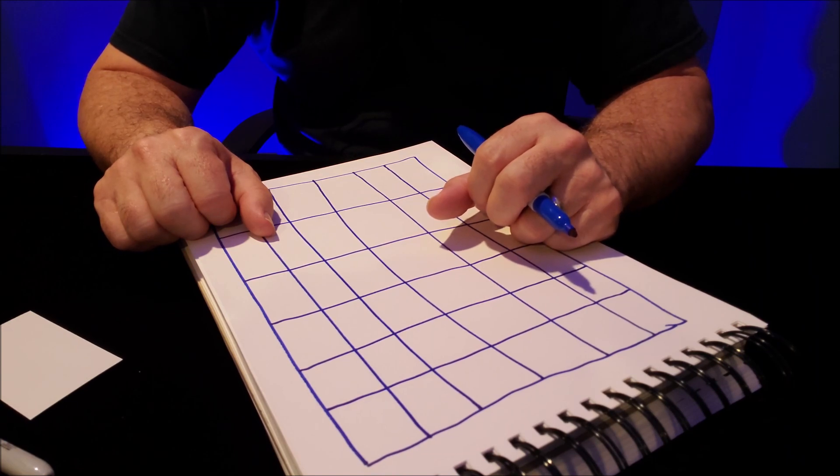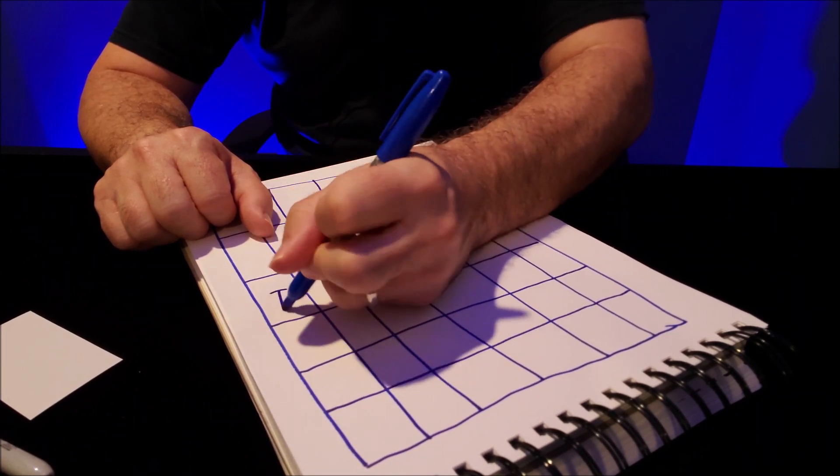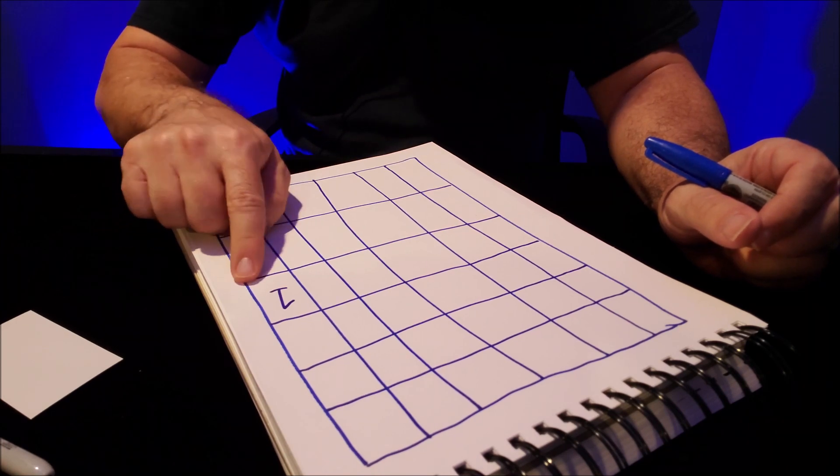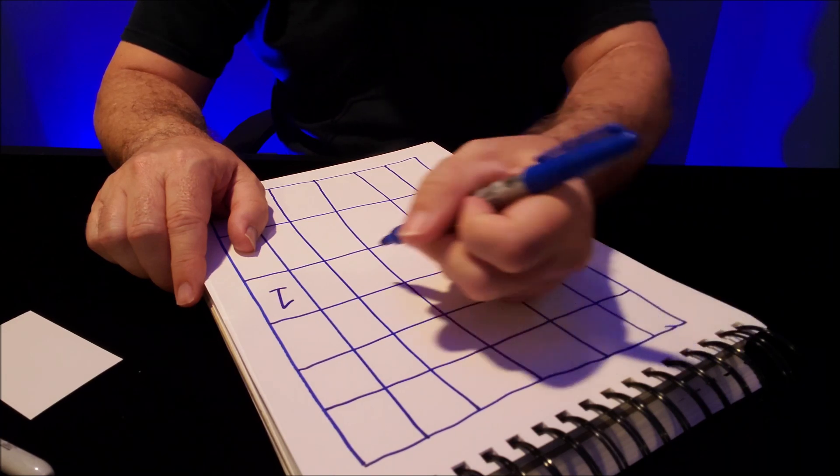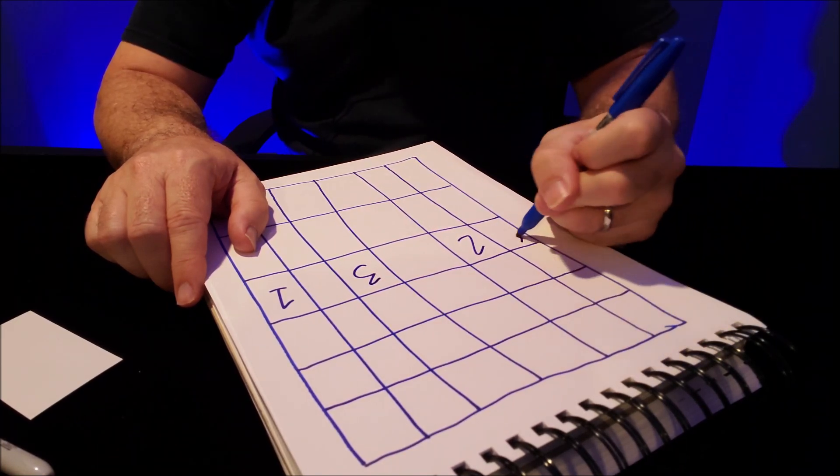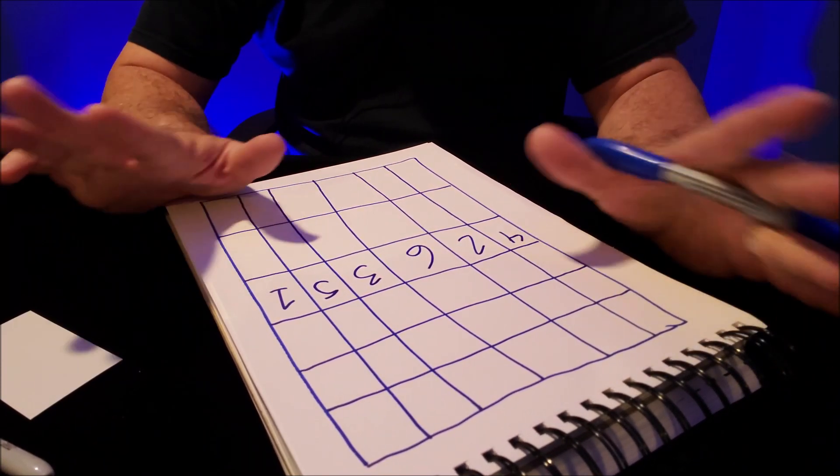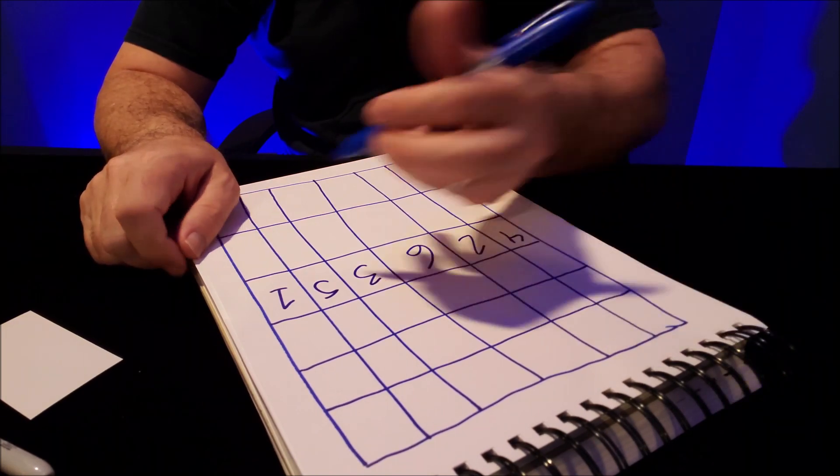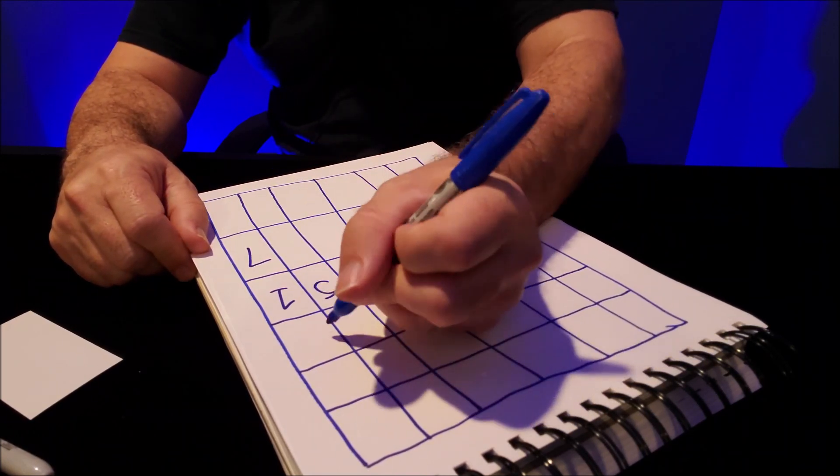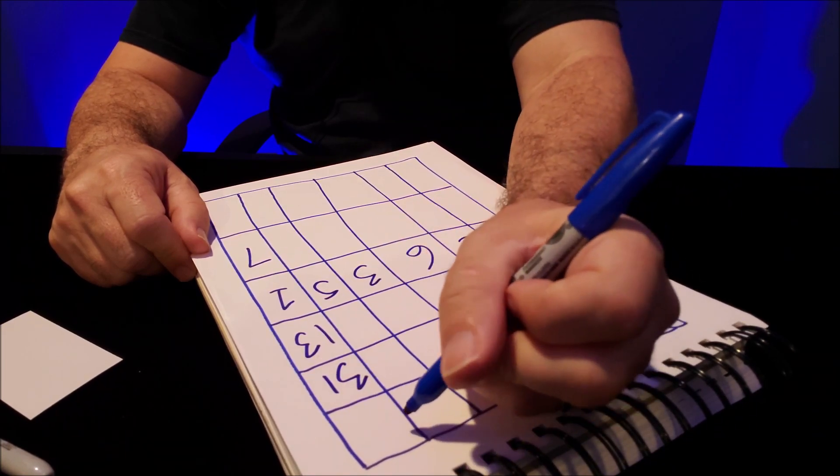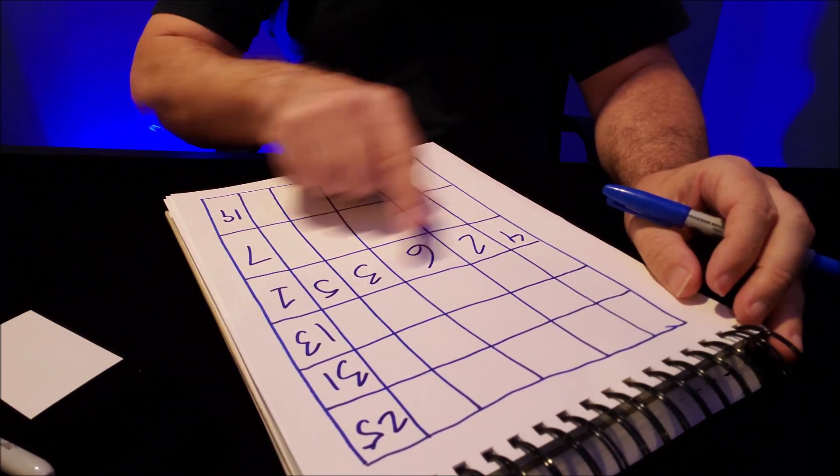So you're going to fill all these in with numbers now. The way I always remember it is it's four down on this side. So one, two, three, four. That's where my number one goes. Numbers one through six will go here. So the number two goes over here, the number three goes here, the number four goes there, the number five goes there, and the number six goes there. Then you're going to do that same pattern starting with seven. So seven starts there, 13 goes up here, 31 starts here, 25 starts here, and 19 starts here.